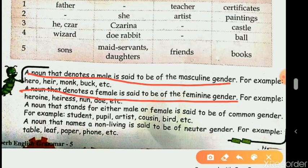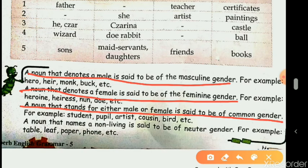Common gender: a noun that stands for either male or female is said to be of common gender. For example, 'student' can be a girl or a boy. Teacher can be a lady or a man. Generally, all occupations come under common gender. Examples: students, pupil, artist, cousin, bird, friends, teacher.